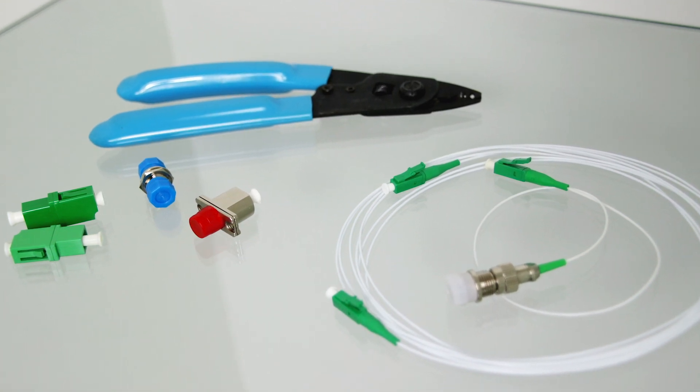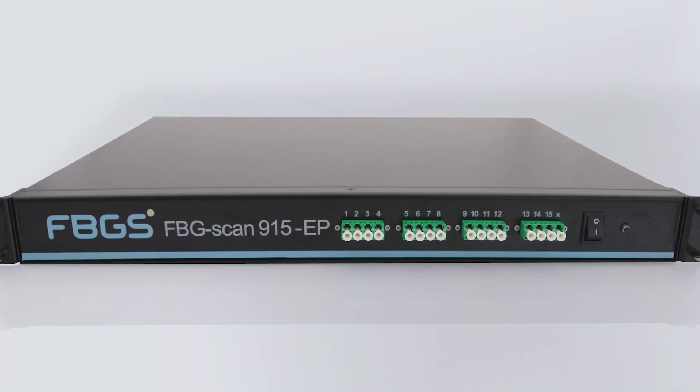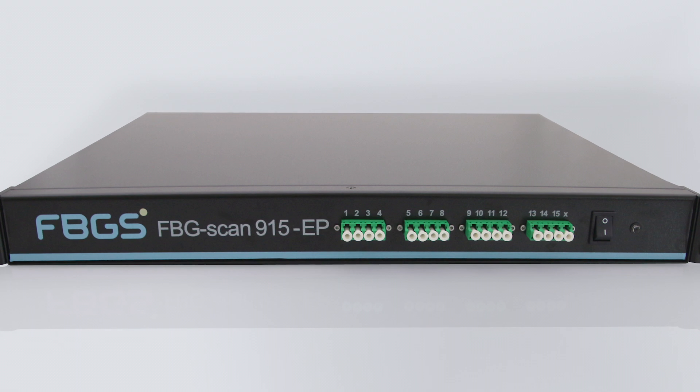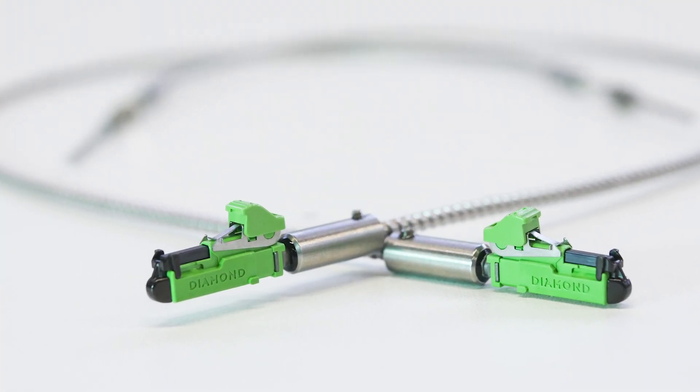These connectors minimize back reflection. It means that the reflected light from the connection does not stay in the core but leaks out into the cladding instead. This property supports a clearer reading of our gratings.